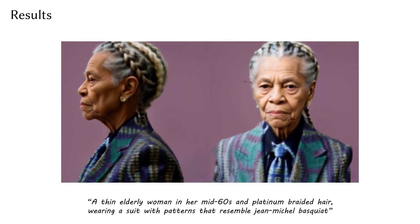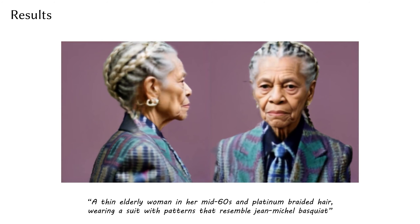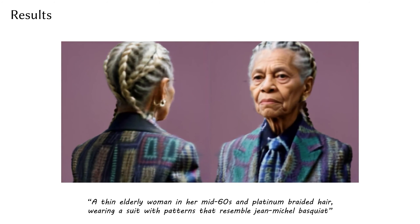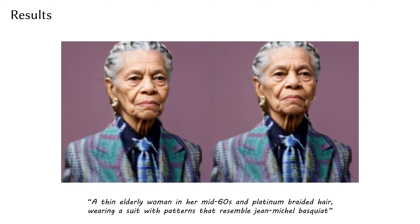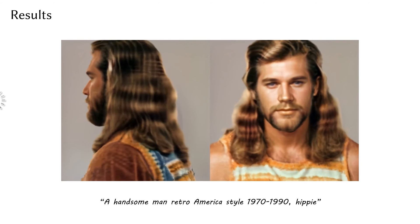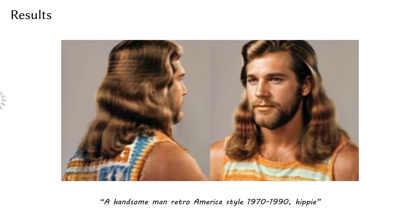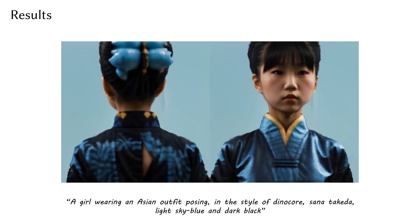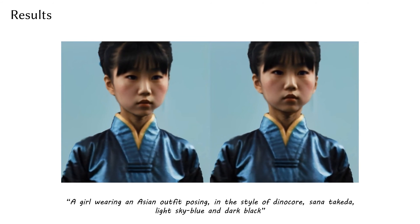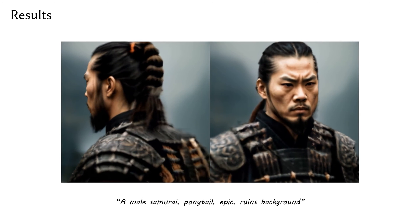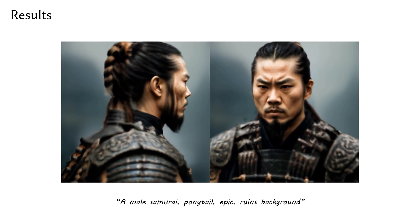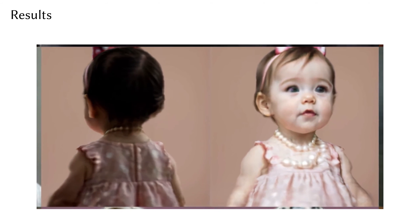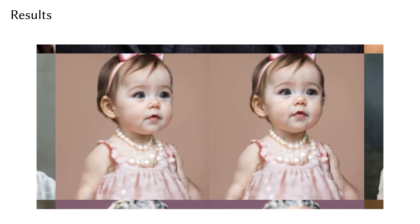Now we present a set of text-to-3D portrait results generated by Portrait 3D. This 3D portrait is generated from the prompt 'a thin elderly woman in her mid-60s with platinum-braided hair, wearing a suit with patterns that resemble Jean-Michel Basquiat.' A handsome man, retro-America-style, 1970–1990, hippie. A girl wearing an Asian outfit posing in the style of Dynacore, Sana Takeda, light sky blue and dark black. A male samurai, ponytail, epic, ruins background. Portrait 3D is able to generate a diverse range of 3D portraits encompassing various races, ages, genders, hairstyles, and so forth.